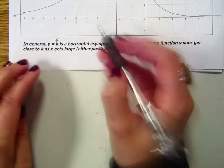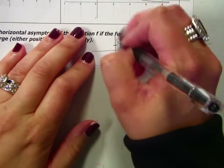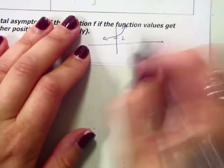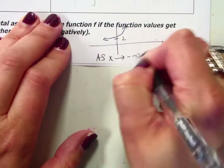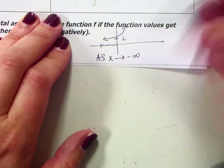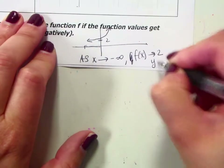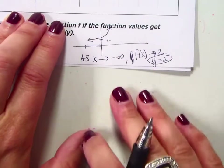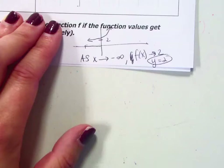Let me say that all one more time. Let's say we have y equals 2 here as our graph. As x approaches negative infinity — as x gets closer to those negative x numbers — your y values are getting closer to 2. So f(x) approaches 2. That means y equals 2 would be a horizontal asymptote. This is a lot of fancy words for saying: if your y values keep getting closer and closer to a value, then y equals that value is your horizontal asymptote.